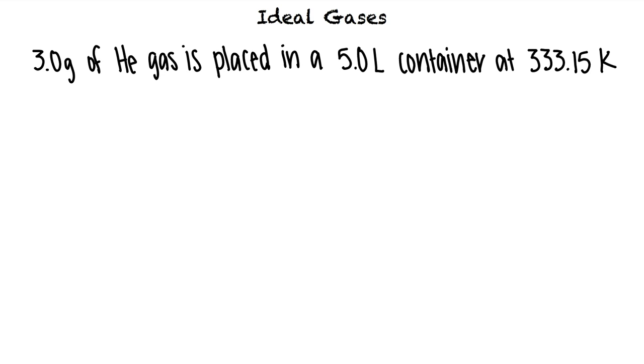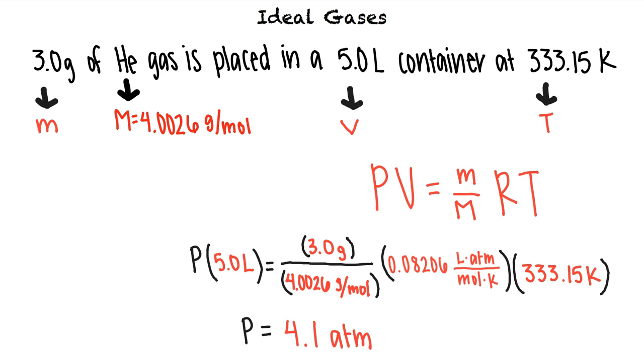Knowing that the molar mass of helium is 4.0026 grams per mole, we can substitute our values into the ideal gas equation to find the pressure in the container. We see that under these conditions, the pressure is 4.1 atmospheres.